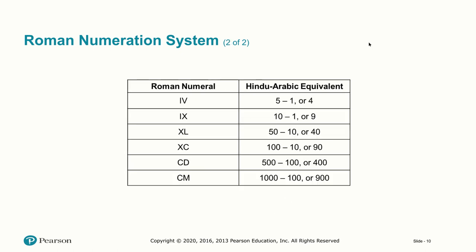The Roman numeral system accounts for larger numbers using a subtractive rule. If you have a smaller number to the left of a larger number, you subtract. So XL would be 50 minus 10, representing 40. Similarly, CM has C to the left of M, so that's 1000 minus 100, representing 900.